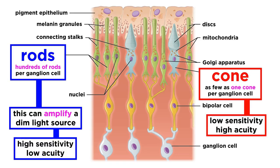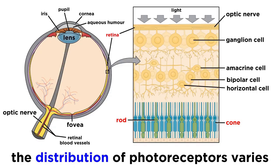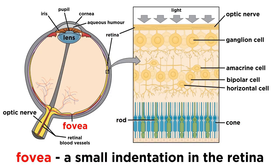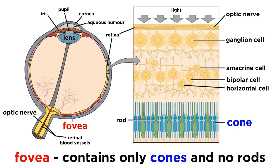With cones, there is less sensitivity but little ambiguity — the stimulus is coming from a distinct place, so with a brighter light source, this is more effective. In terms of the distribution of photoreceptors on the retina, we must be aware of the fovea. The fovea, which means pit in Latin, is a small indentation at the center of the retina, and there are no rods at all in the fovea — only cones.